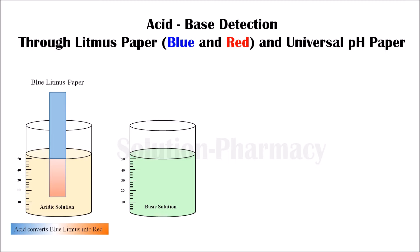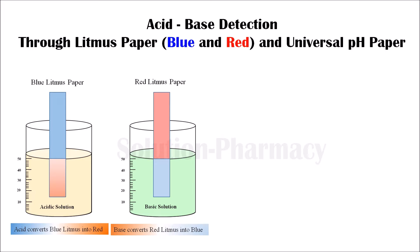Now let's take another solution in a beaker. Dip red litmus paper into it — if the red litmus paper changes to blue, it means our solution is basic in nature, because base converts red litmus to blue. Here you can see the red litmus paper changes to blue in color, which confirms that our solution is basic in nature.